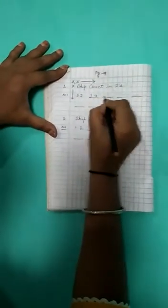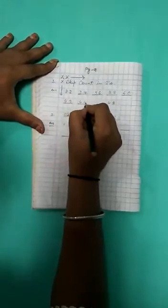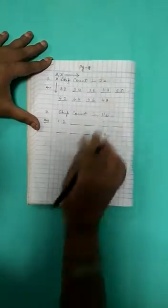Now question number 1 is skip counting 2s. 2s means here you jump 2, 2 numbers. So here written 32. After that you write 34, 36, 38, 40, 42, 44, 46, 48. Okay?